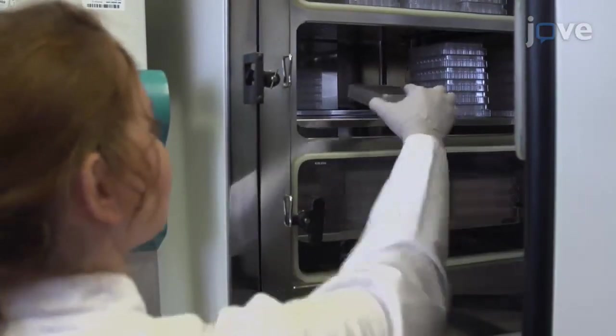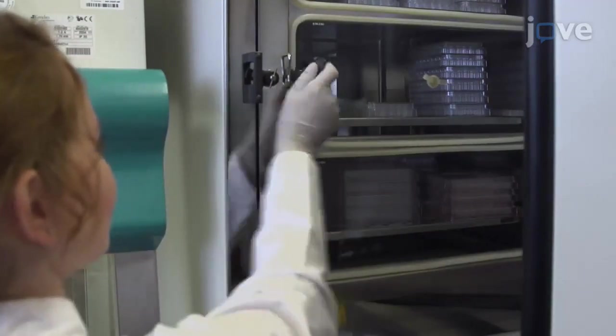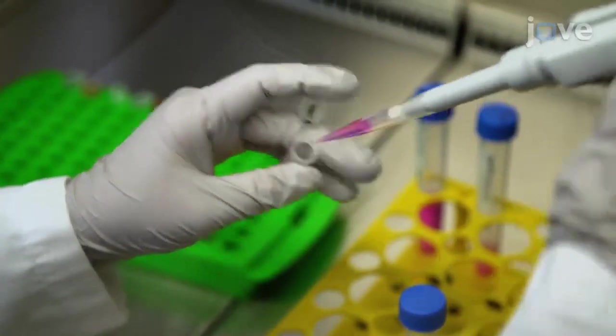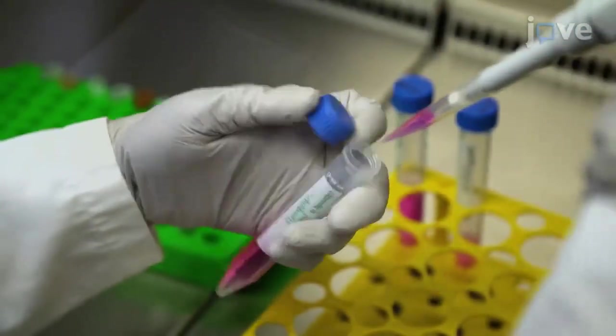Start by pre-warming 48 well plates at 37 degrees Celsius for post-electroporation seeding. Then prepare basal and organoid culture-specific mediums according to manuscript directions.